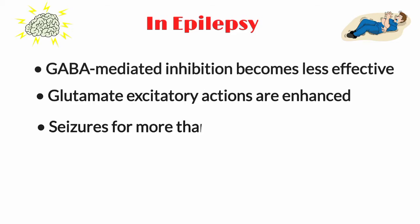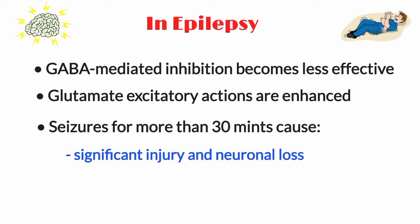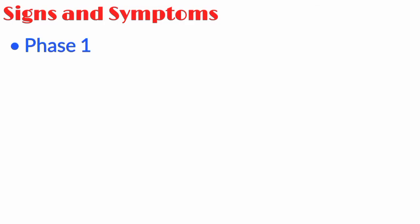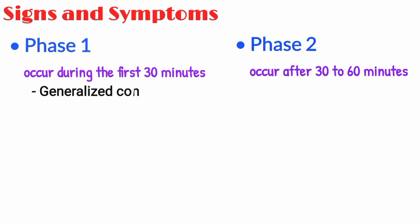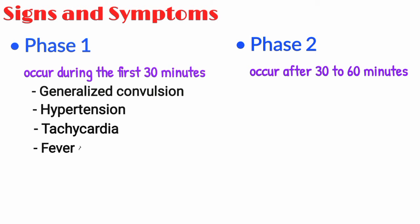Seizures lasting more than 30 minutes cause significant injury and neuronal loss. Systemic changes appear in two phases during status epilepticus. Phase 1 occurs during the first 30 minutes and is characterized by generalized convulsions, hypertension, tachycardia, fever, and sweating.